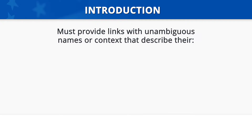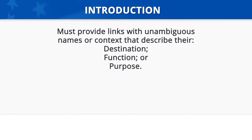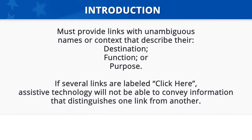Introduction. It is important to provide unambiguous names or context that describes the destination, function, or purpose of the link so that assistive technology can correctly identify information. For example, if you have several links on your page all labeled as 'Click Here,' then assistive technology will not be able to convey to individuals with disabilities information that distinguishes one link from another.